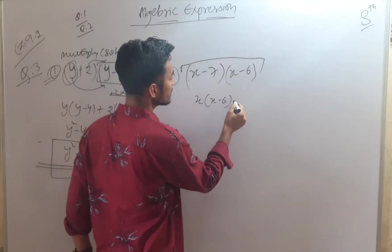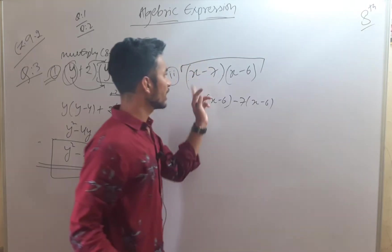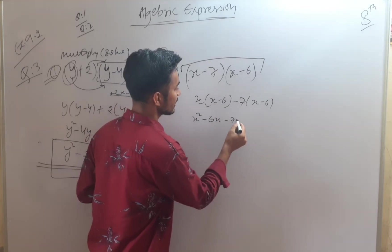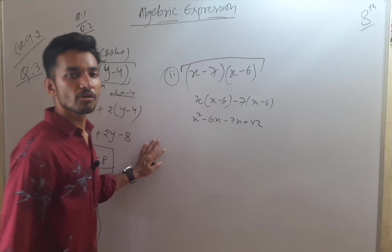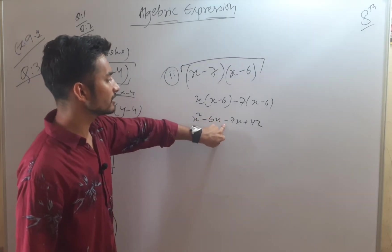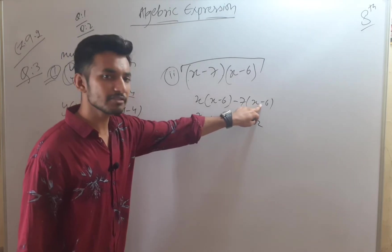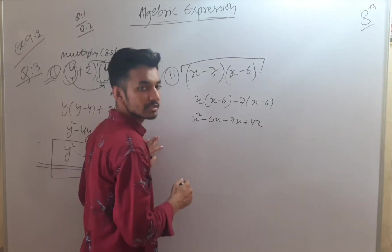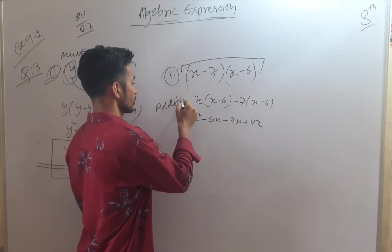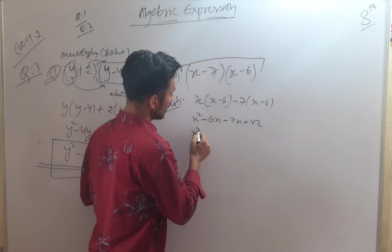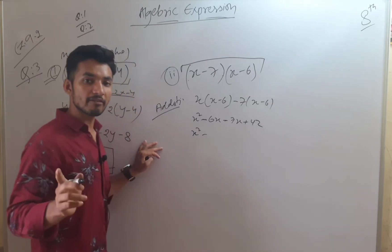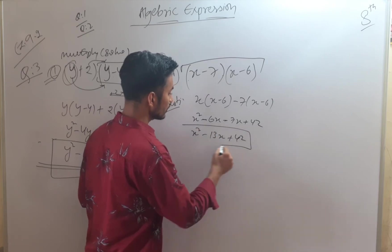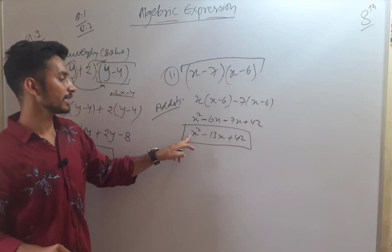Initially we will take (x-6), then minus 7 times (x-6). So x and 7 will multiply. x into x gives x², then we have -6x, then -7x, then plus 42 — because minus times minus is positive. So x² minus 6x minus 7x plus 42. Combining -6x and -7x gives -13x. So our final expression is x² minus 13x plus 42.